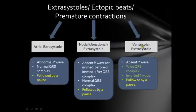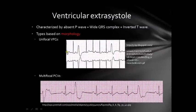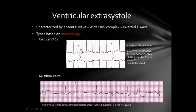The third and last category is called ventricular extrasystole, characterized by an absent P wave, a wide QRS complex — greater than three small squares because it originates from the ventricles — an inverted T wave, and it's followed by a pause. In this example, we have an abnormal beat. Note this wave here is the T wave of the preceding beat, not a P wave. So we have absent P wave, wide QRS complex, inverted T wave, and a pause. The interval between this QRS complex and the next one is longer than the normal RR interval.